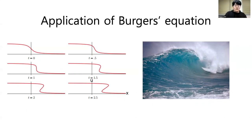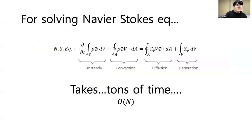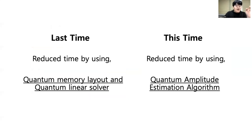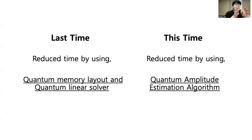As I told you in the last presentation, solving Navier-Stokes equation takes a lot of time — at least O(N) to O(N log N). In my last presentation I introduced one method to speed things up using a quantum memory layout and a quantum linear solver. This time I'll introduce reducing time complexity by using the Quantum Amplitude Estimation algorithm.